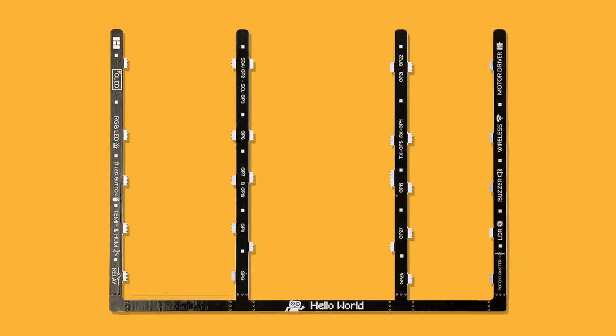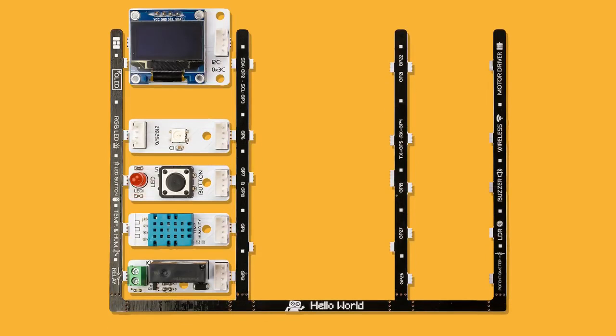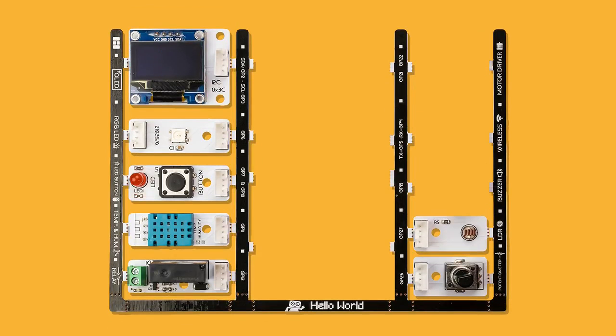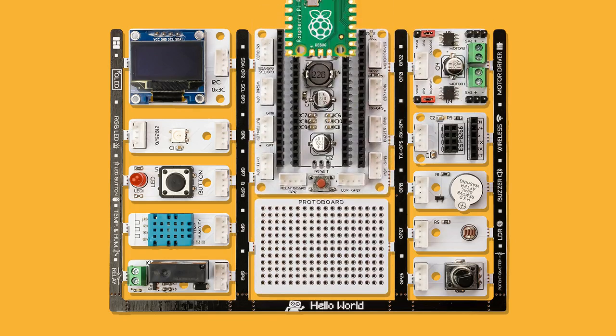Detachable modules include relay, temperature and humidity sensor, push button, RGB LED, screen, potential meter, light sensor, buzzer, IoT board, DC or servo motor driver, protoboard, and the main board.